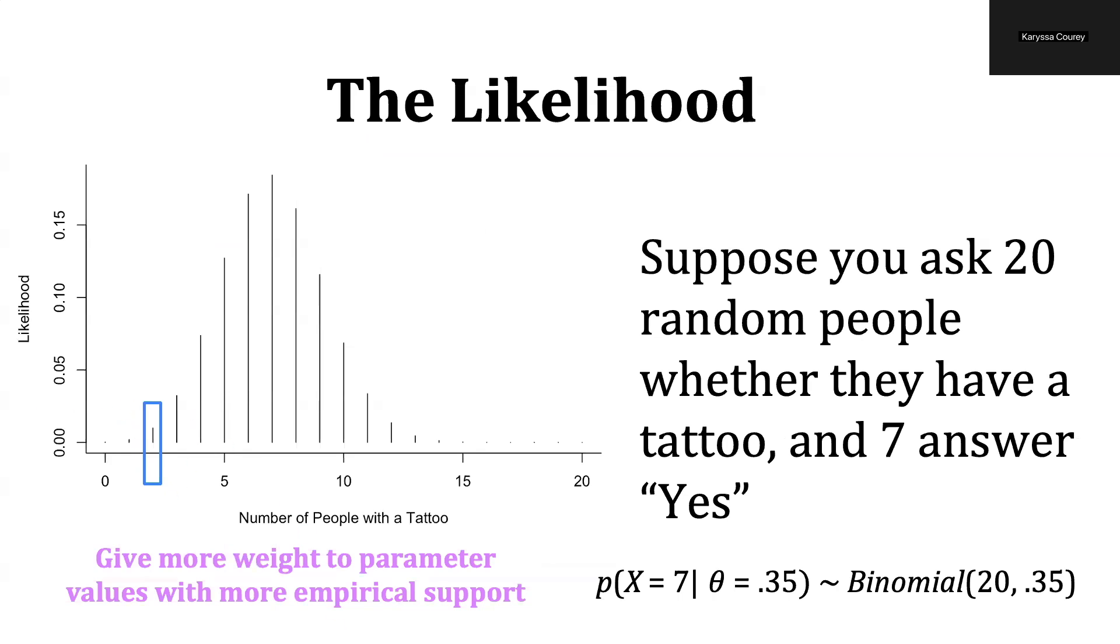So in these cases, we are assuming that theta is a single value. In this case, theta is 35%. But as we talked about before, when we were looking at various prior distributions on theta, it's possible that theta could take on many different values, or that there are many possible parameter values for theta. And that's what we've represented in our priors.